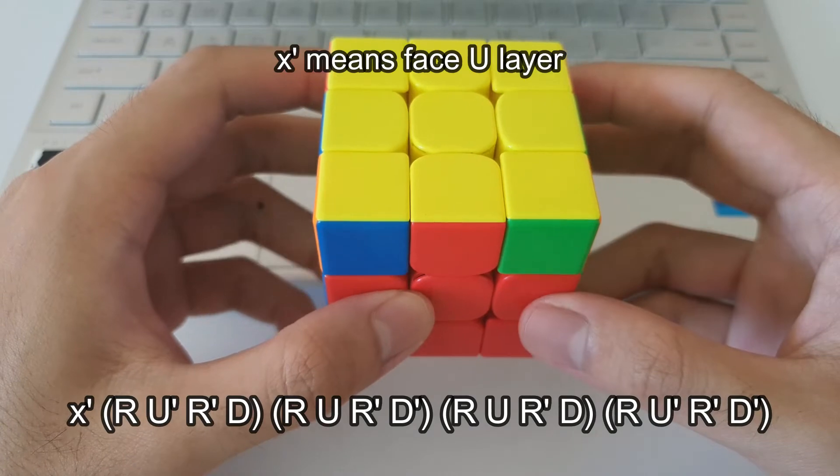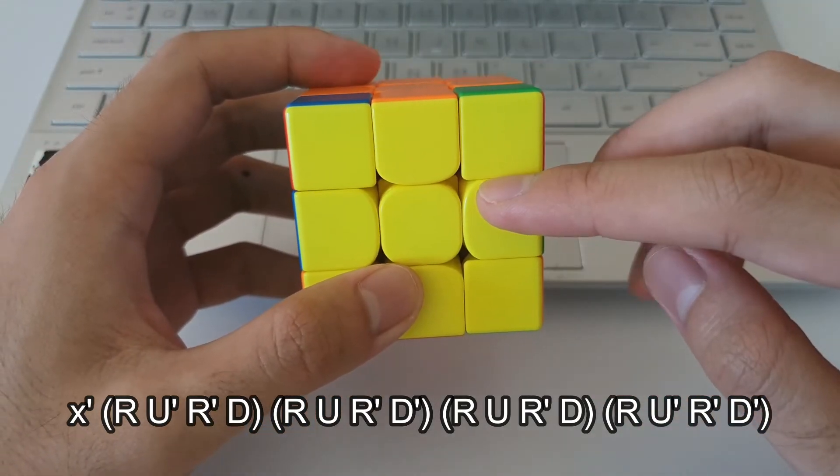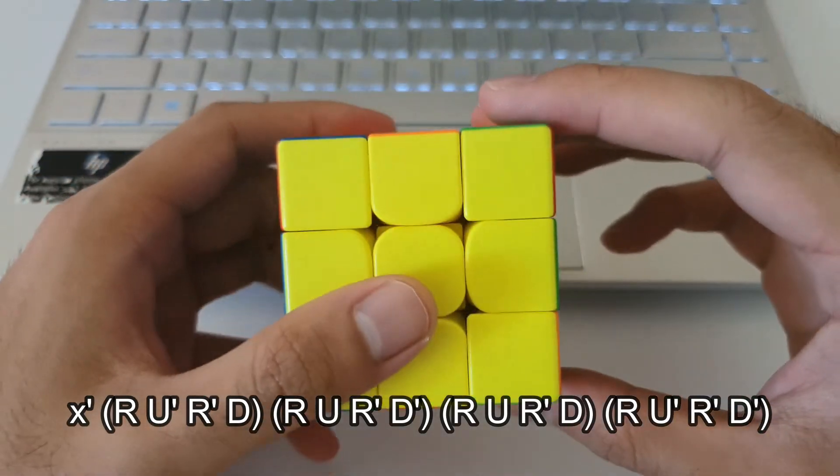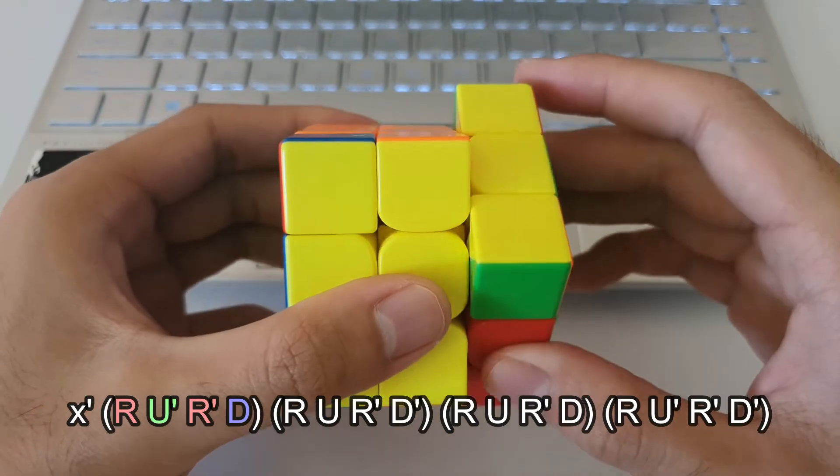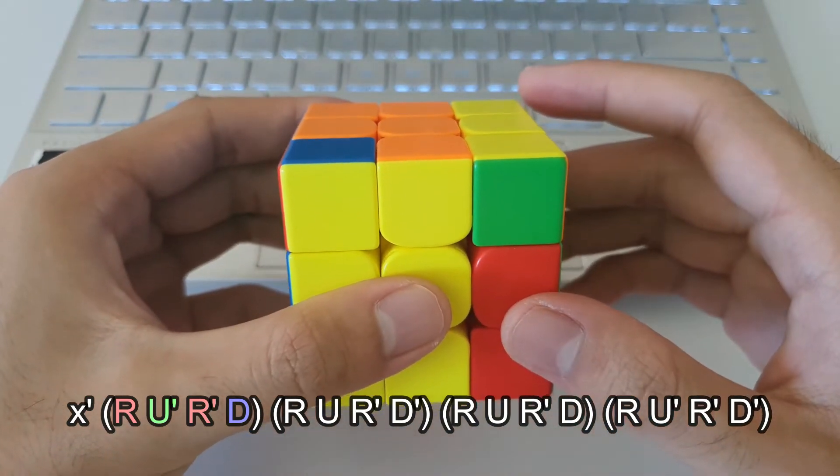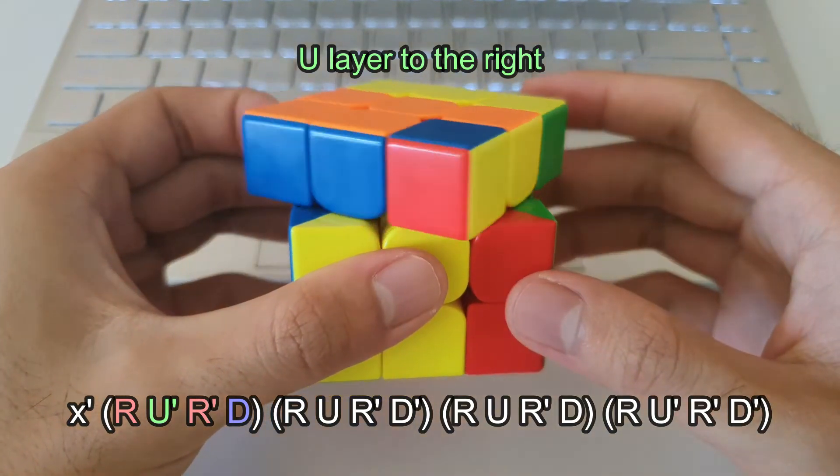So from now, we have to rotate upwards, so make sure you're always facing the yellow side before you do the algorithm. Alright, so the algorithm starts with an R followed by a U prime, so you can remember the U prime as the top layer going towards the right side, like this.